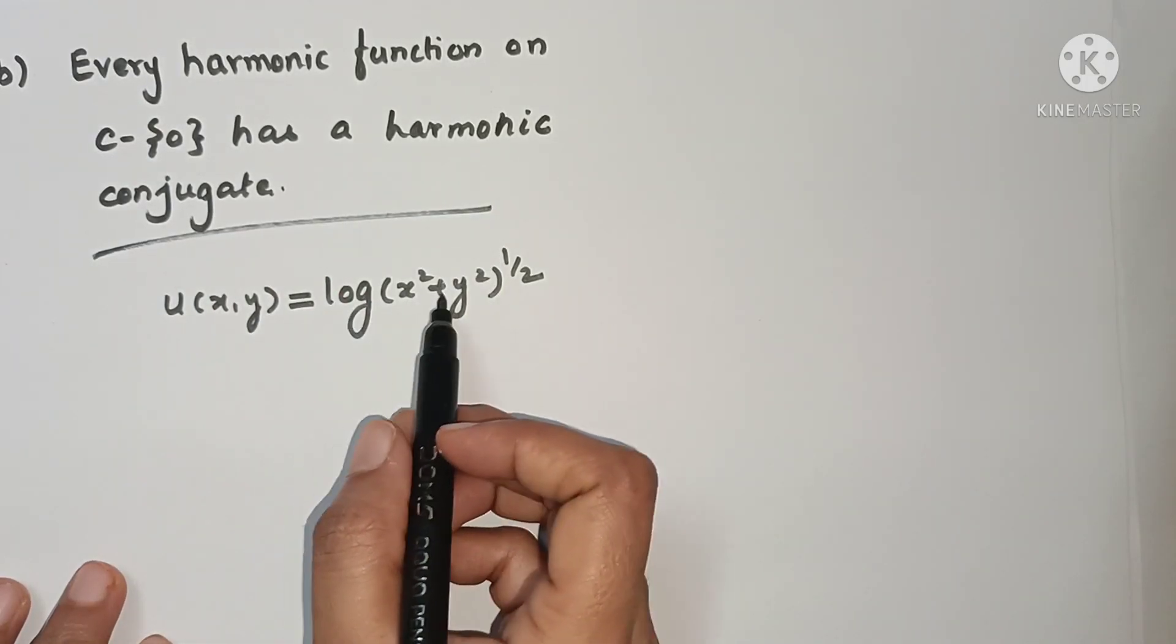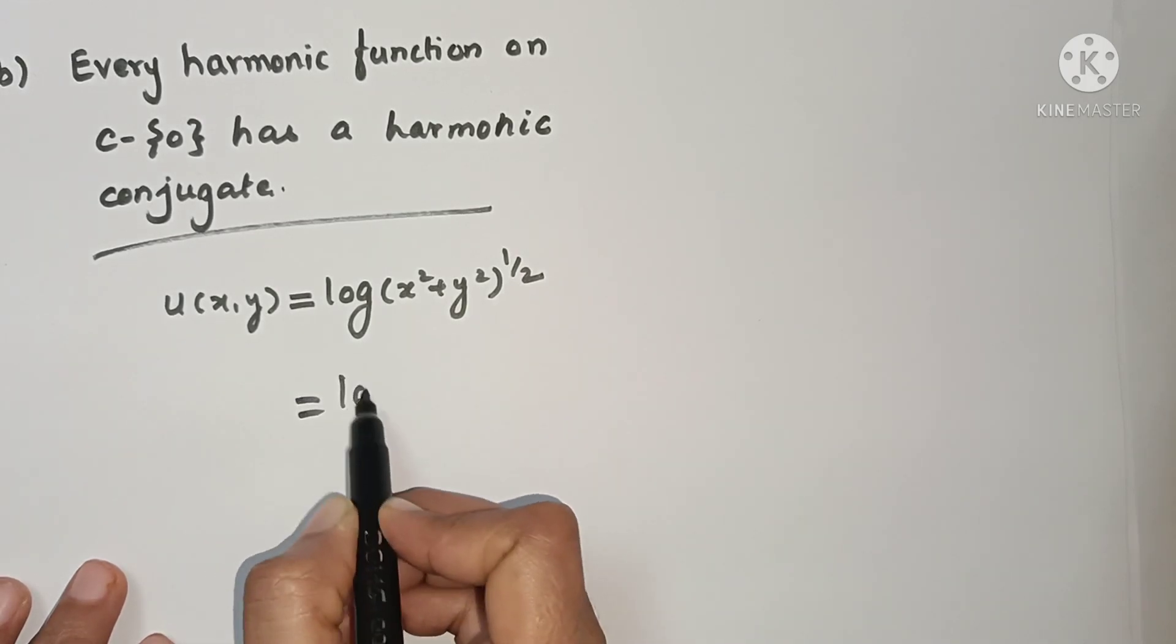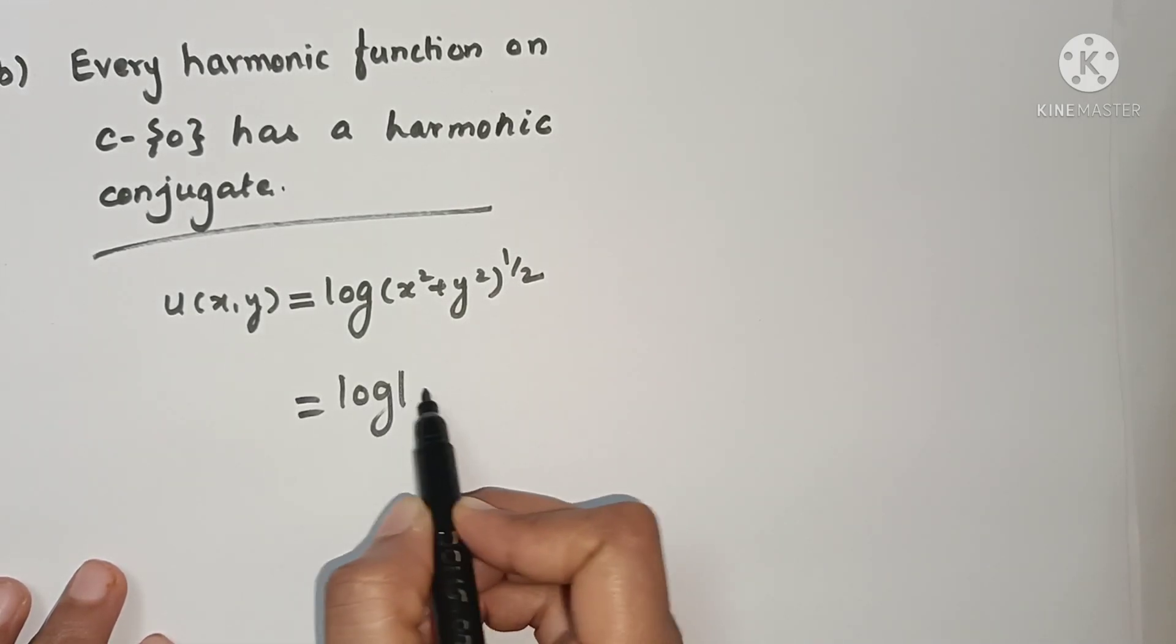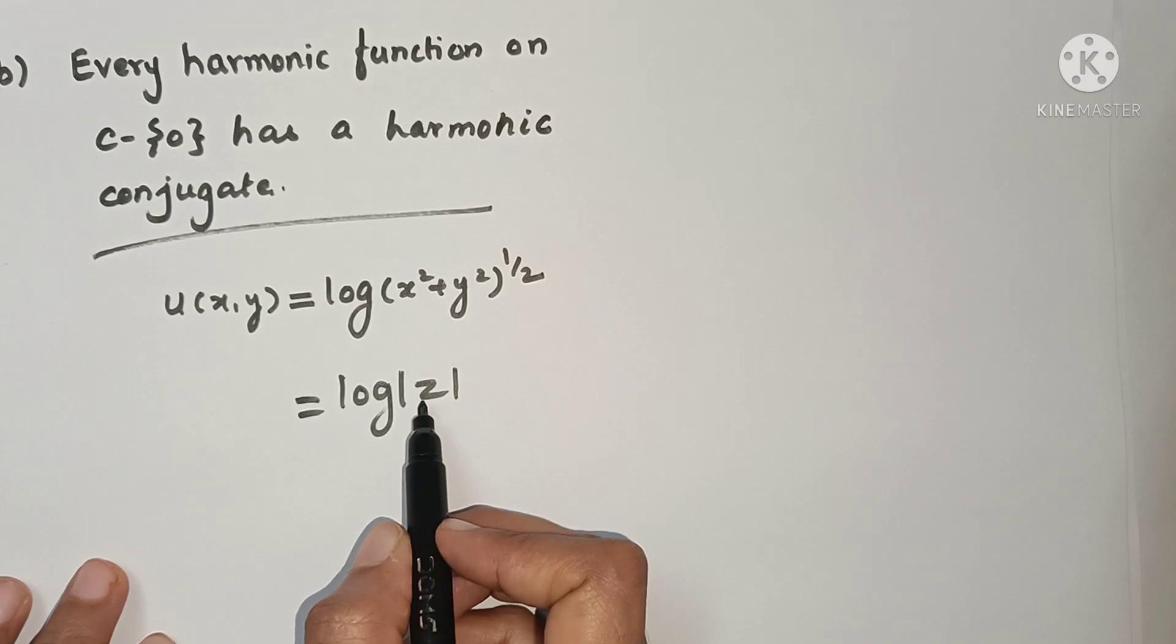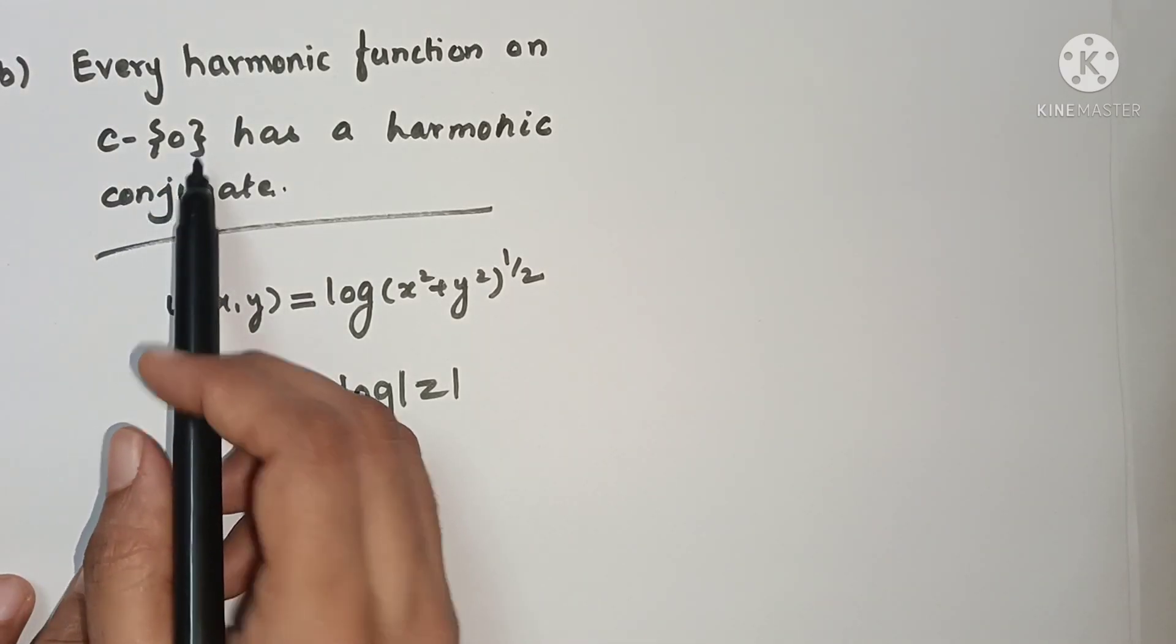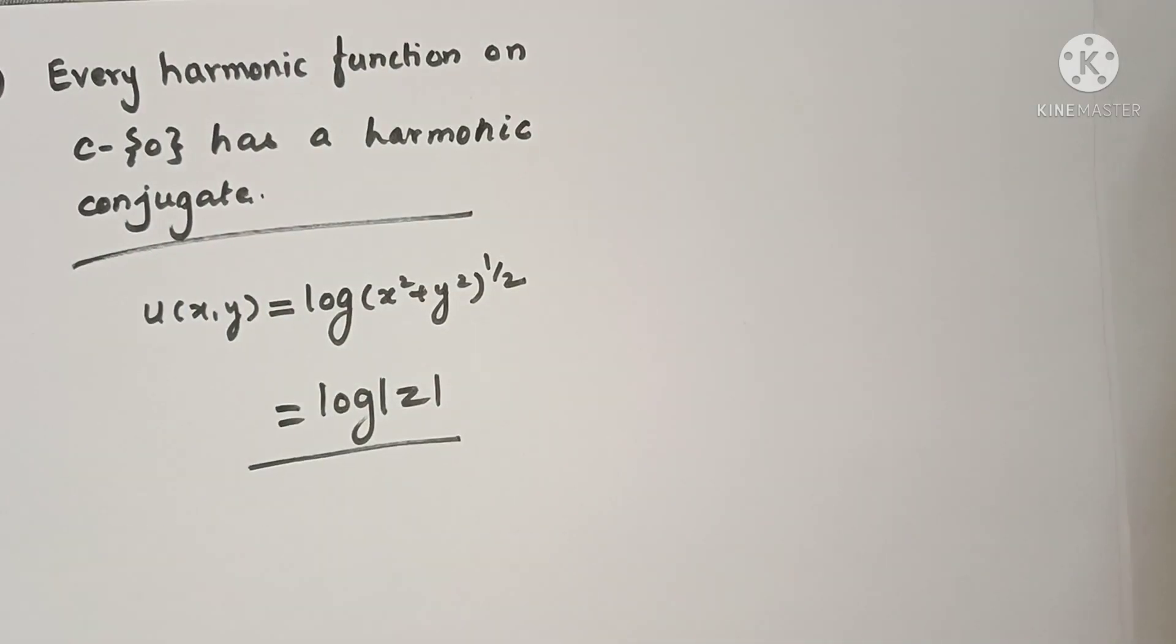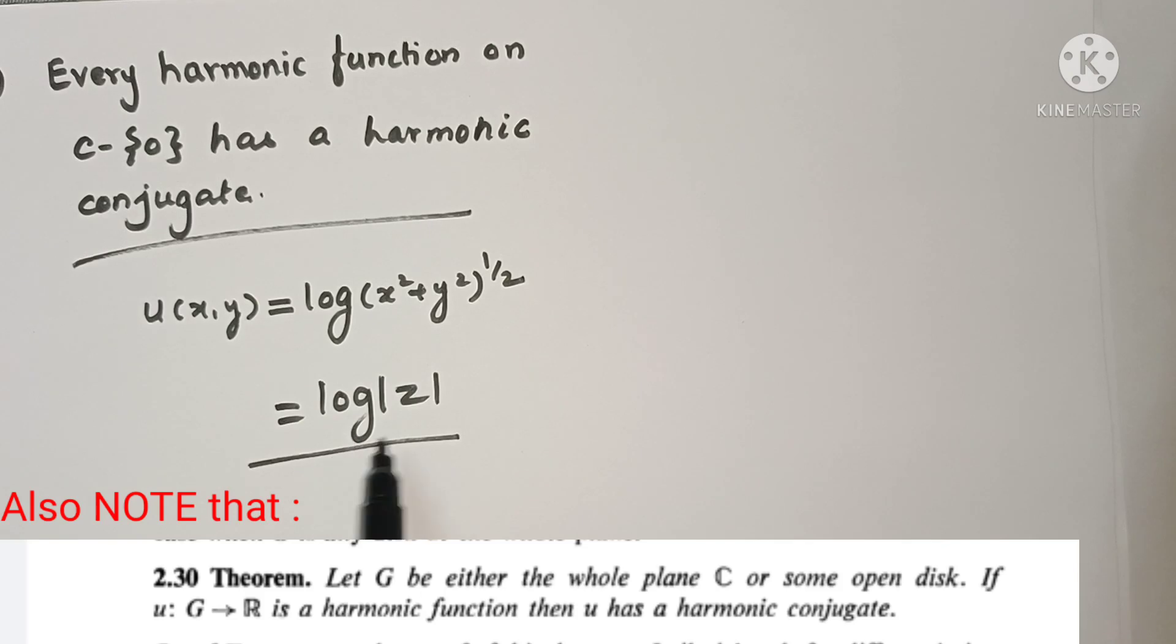U(x,y) is equal to log of (x² + y²)^(1/2), and you can write it like this. It is nothing but log |z|. So this harmonic function is on C minus 0, but this conjugate does not exist. This is a popular example of log |z|.